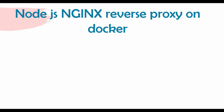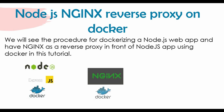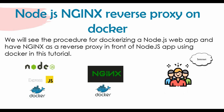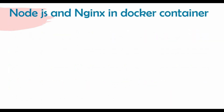In this tutorial, we are going to have a Node.js app and also Nginx as a reverse proxy on Docker. We'll see the complete procedure of dockerizing a Node.js web app and have Nginx as a reverse proxy in front of it. So we'll be running Node.js and Express on Docker, and also running Nginx on Docker. Users accessing the Node.js app will first hit Nginx, which will then contact the Node.js web app and return the output.